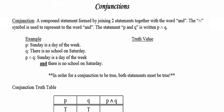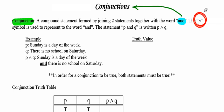So first of all, what is a conjunction? A conjunction is a compound statement that we make by joining two statements together using the word 'and.' So anytime you see the word 'and,' you're working with a conjunction. The symbol we use to represent 'and' is the little tent or caret. So when you see P caret Q, you think P and Q.